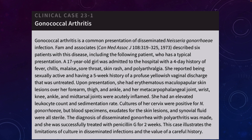A 17-year-old girl was admitted to the hospital with a four-day history of fever, chills, fatigue, sore throat, skin rash, and pain in multiple joints. She was sexually active and had a five-week history of yellowish vaginal discharge left untreated. She had a red rash on her forearm, thigh, ankle, and inflammation in the hand joints, wrist, knee, and ankle. Cultures of the cervix were positive for gonorrhea, but blood, skin lesion exudate, and synovial fluid were sterile. A diagnosis of disseminated gonorrhea with polyarthritis was made, and she was successfully treated with penicillin G for two weeks. This case illustrates the limitation of culture in disseminated infections — bacteria levels that disseminate may be low, but you still get all the symptoms.